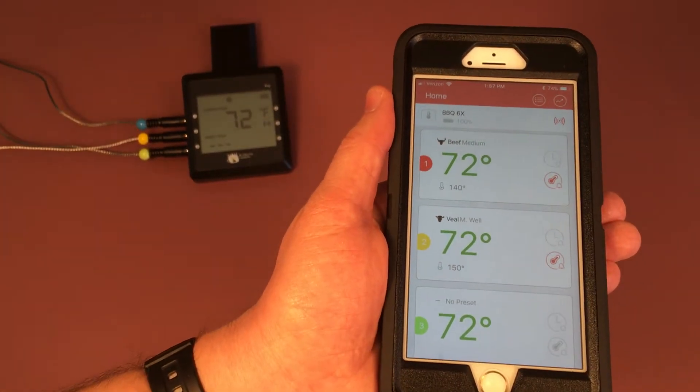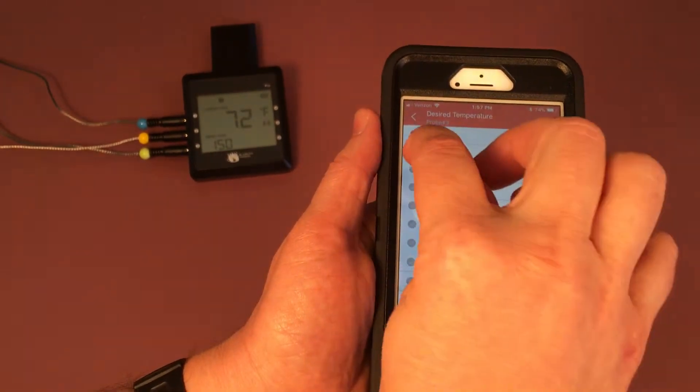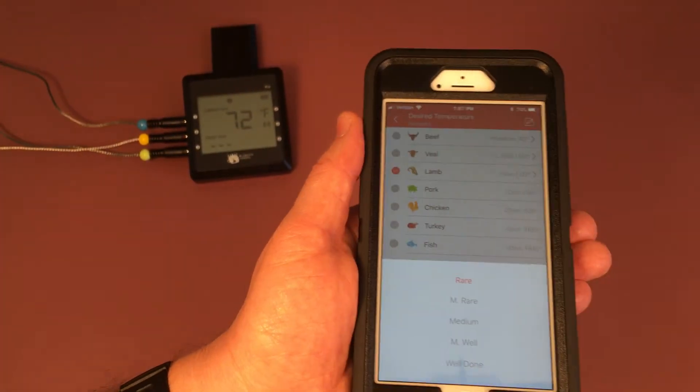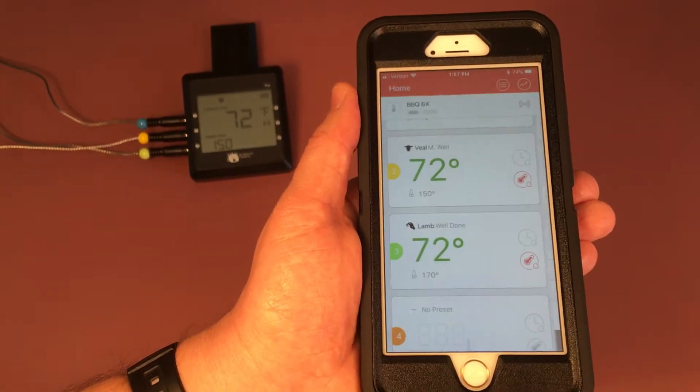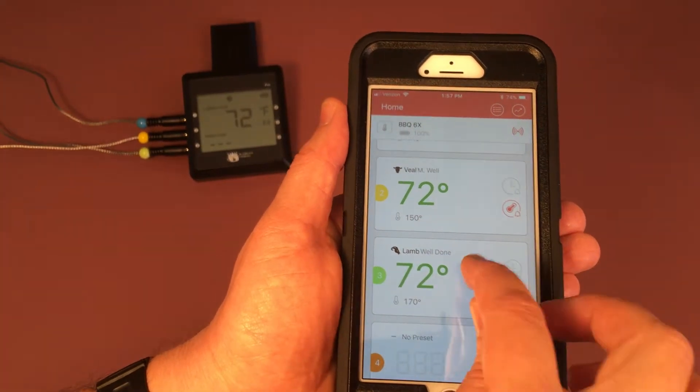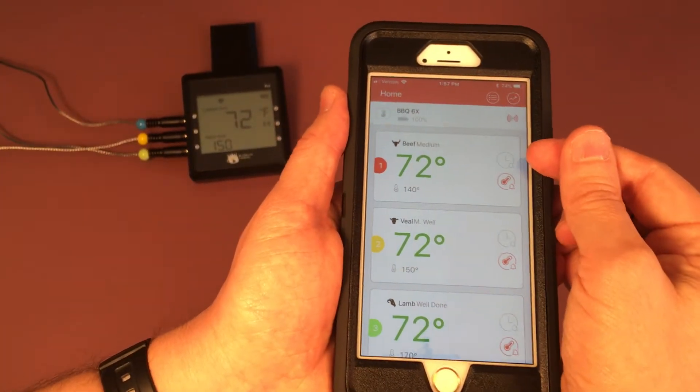We'll go ahead and set the third one. Let's choose lamb and we'll choose well done, and again set preset.